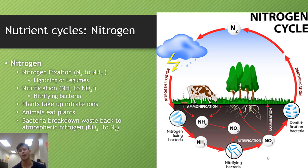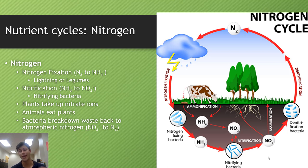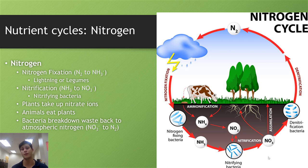NH3⁻ can't really be used by anything other than certain types of bacteria. However, through a process known as nitrification, NH3⁻ is converted into NO3⁻ by different types of bacteria. NO3⁻, or nitrate, can actually be used by plants and animals — plants uptake those nitrate ions, and animals eat plants and incorporate that nitrate into their tissues. Once those organisms decay and break down back into the soil, bacteria convert NO3⁻ back into N2 through a process known as denitrification, where it can re-enter the atmosphere.